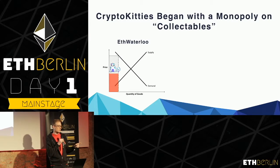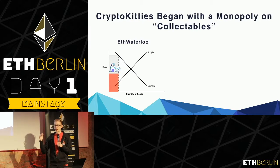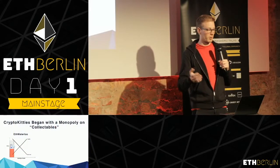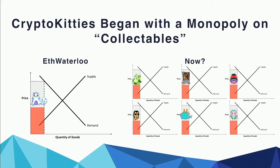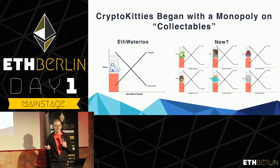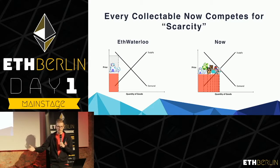Looking at the timeline of when NFTs began — at ETH Waterloo when CryptoKitties launched — they created a limited quantity that was probably less than total market demand for collectibles in general. That's probably why the price hit such a high point and jammed up the Ethereum blockchain. It was entering a freshly new market, which meant it had a monopoly over the collectibles market. Nowadays, there are a lot of other collectible projects trying to go after a similar model, hoping to capture all the excitement like CryptoKitties did. However, each of these projects is not operating in its own independent silo — at this point, they're all competing in a similar market for scarcity. So if one collectible becomes too scarce, you can simply move on to another collectible.